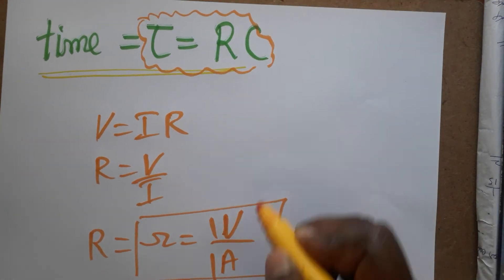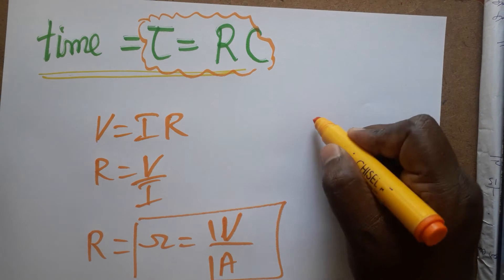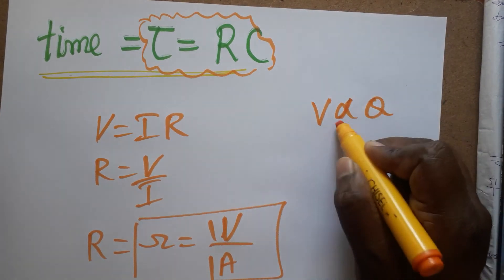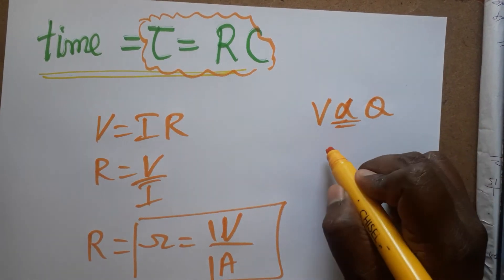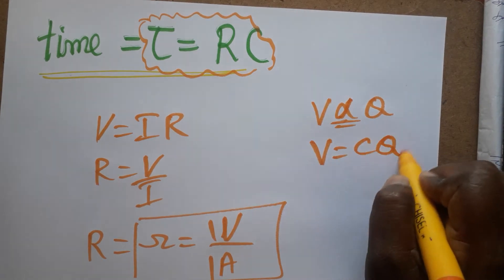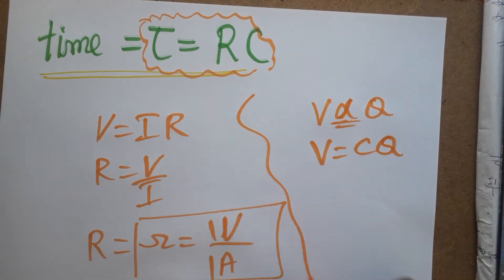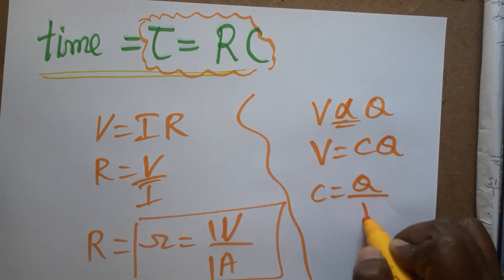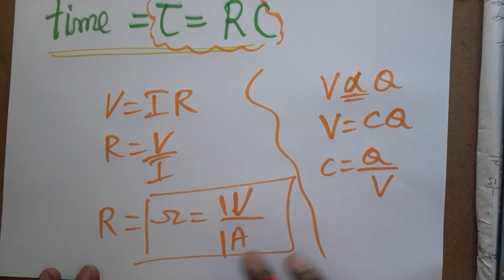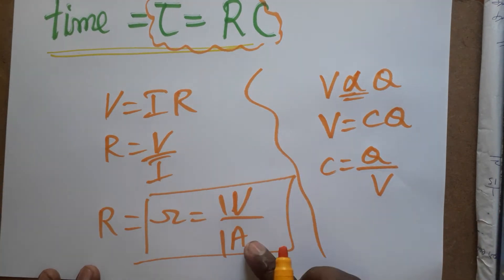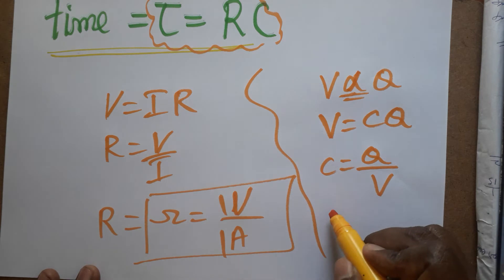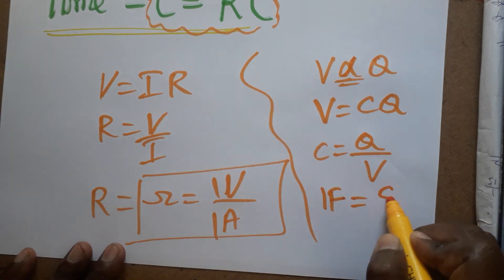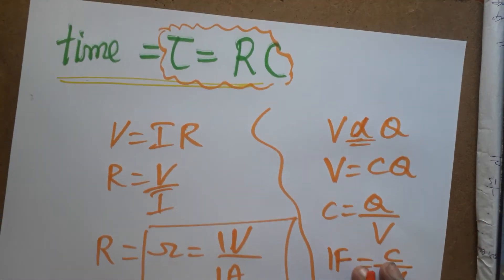For capacitance, voltage is directly proportional to charge. Removing the proportionality constant, V is equal to Q divided by C, so C is equal to Q divided by V. The unit of capacitance is the Farad, and Farad is equal to Coulombs divided by Volt.